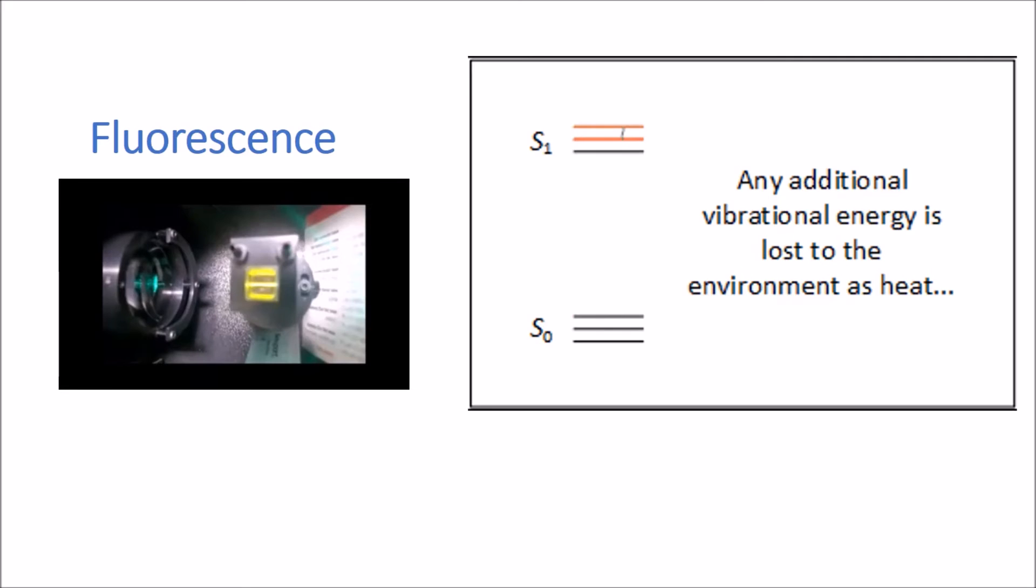After excitation, any additional vibrational energy is quickly lost to the environment as heat. This takes the system to its lowest vibrational energy of its electronic excited state. This vibrational relaxation results in a slight loss in energy and is the reason why the fluorescence is at a different color to the laser used to excite the sample. We've used this green laser to excite the sample and we've got this yellow fluorescence. Yellow is higher in wavelength or lower in energy than green.